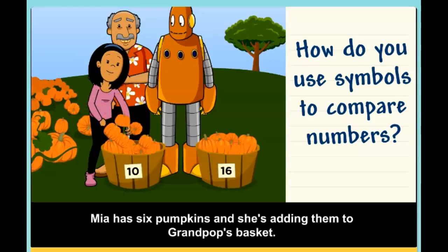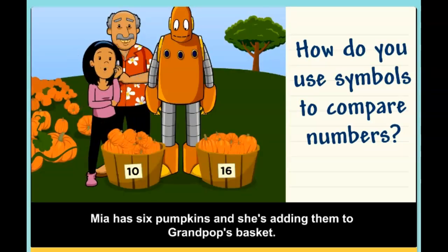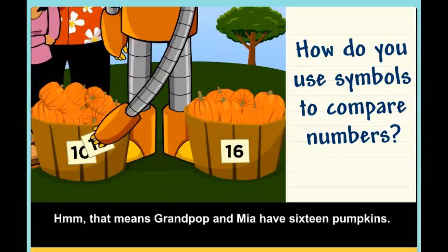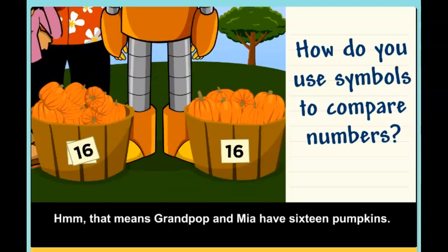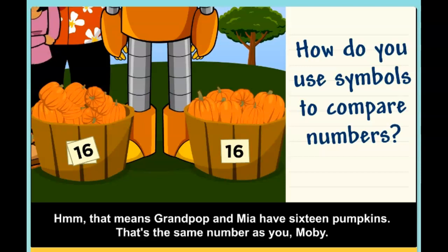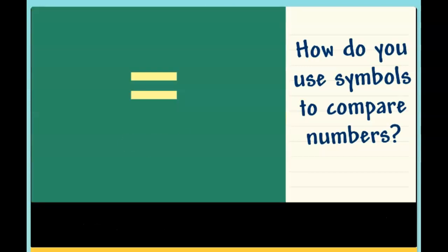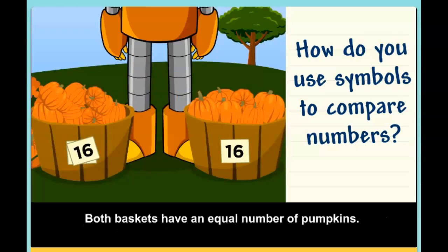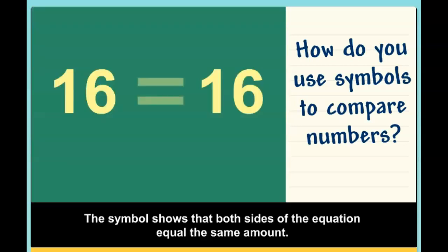Mia has six pumpkins and she's adding them to grandpa's basket. That means grandpa and Mia have 16 pumpkins. That's the same number as you, Moby. This is the equal sign. Both baskets have an equal number of pumpkins. The symbol shows that both sides of the equation equal the same amount.